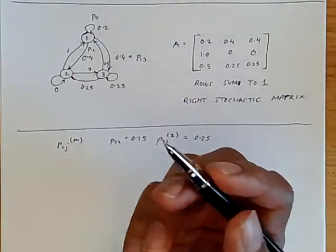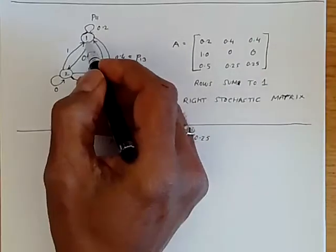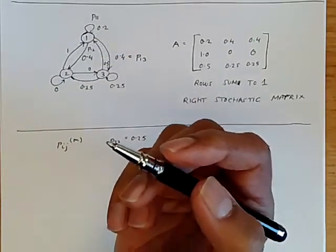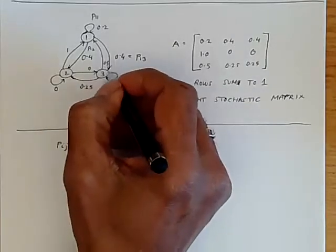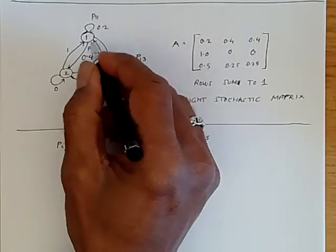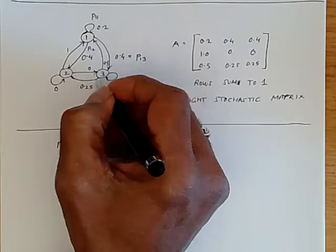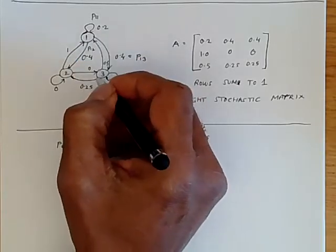But can we get to one in a different way? It doesn't look obvious, but in fact you can. You can stay in state three for one step and then go to one, instead of going from two to one. That's another way of getting to one.